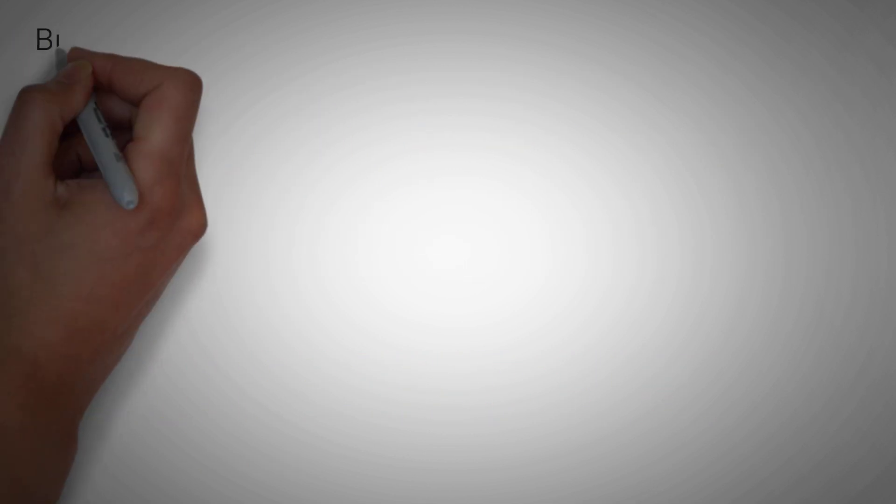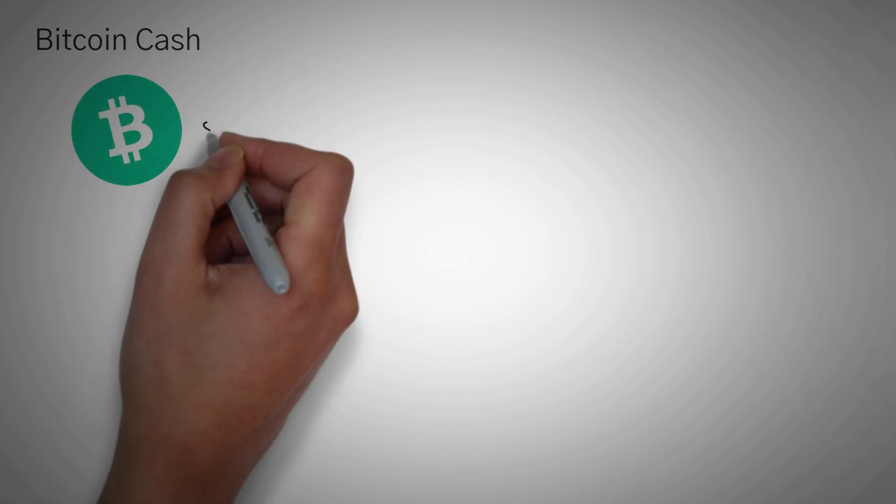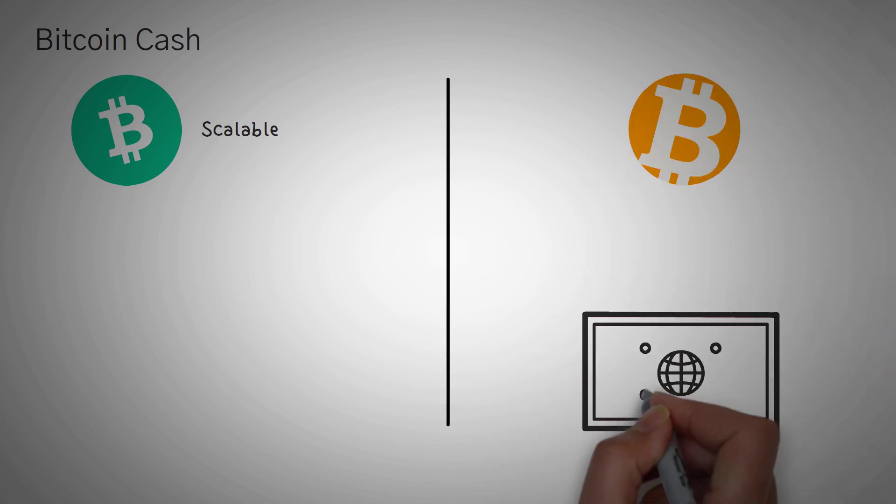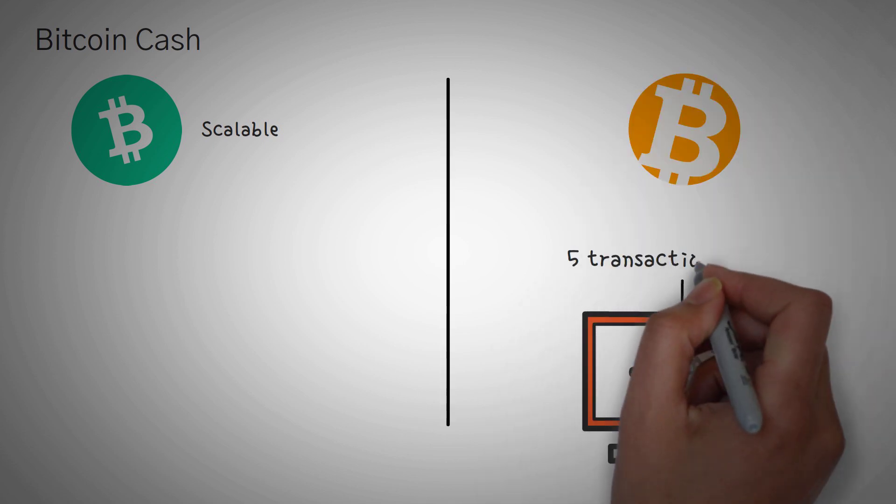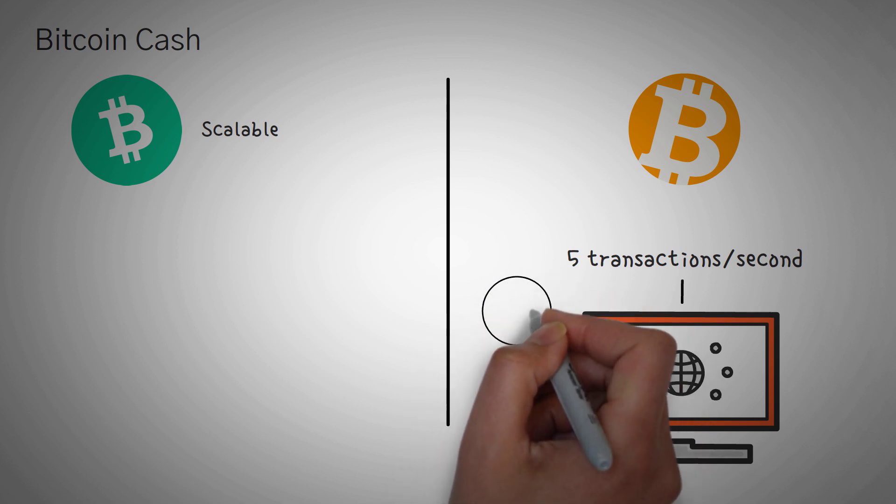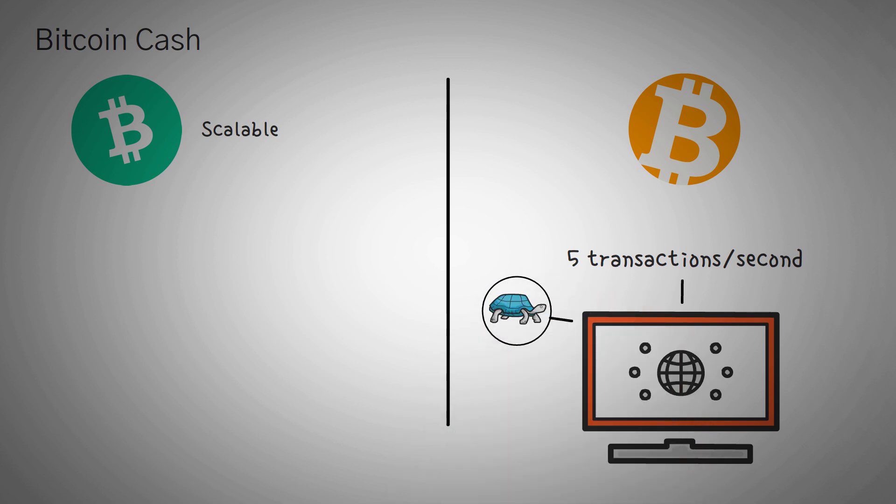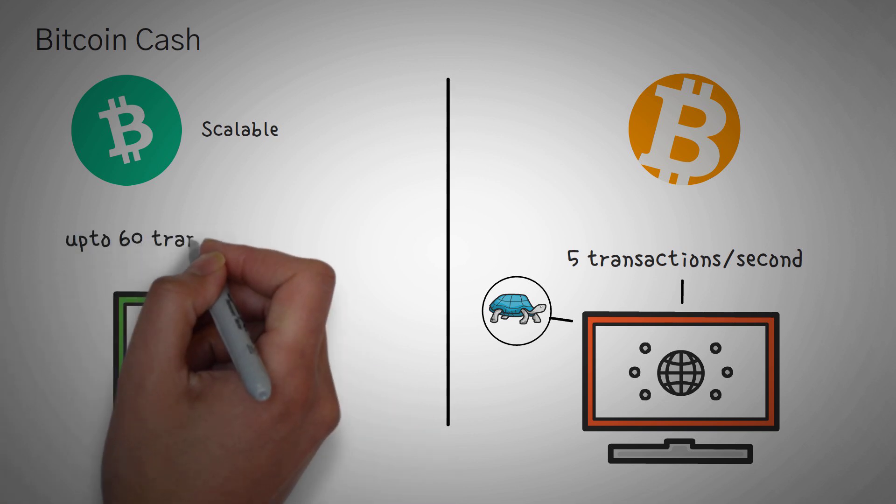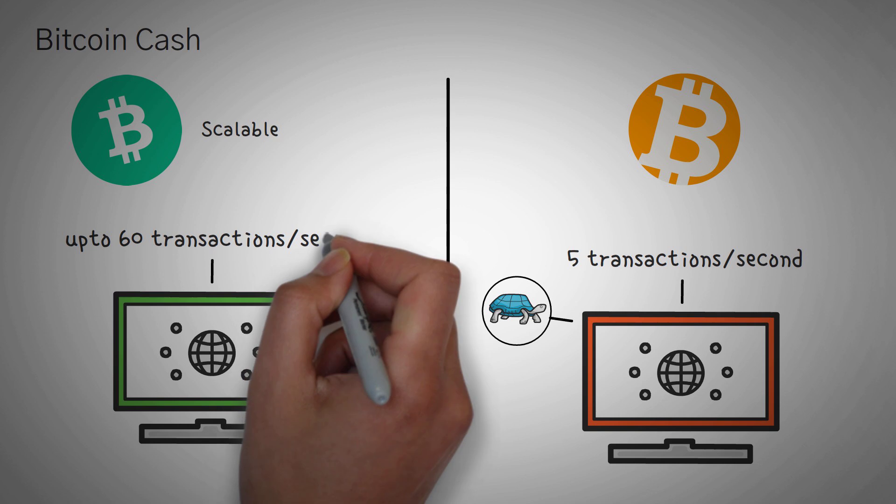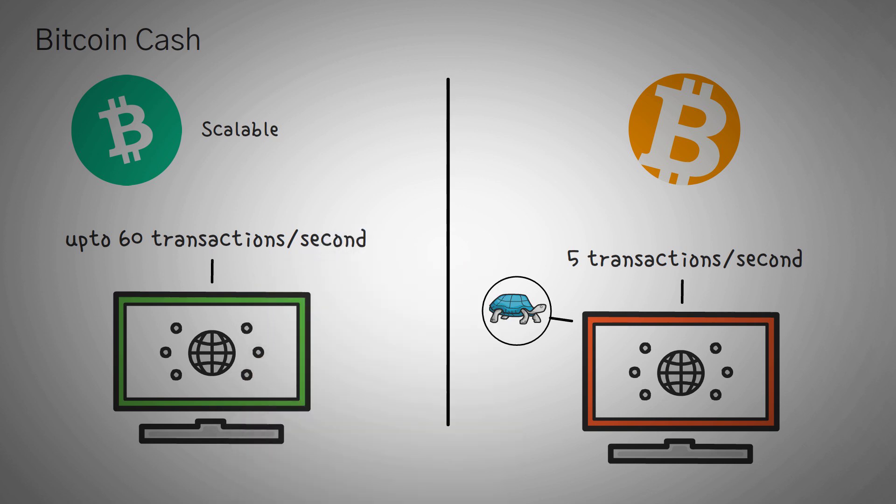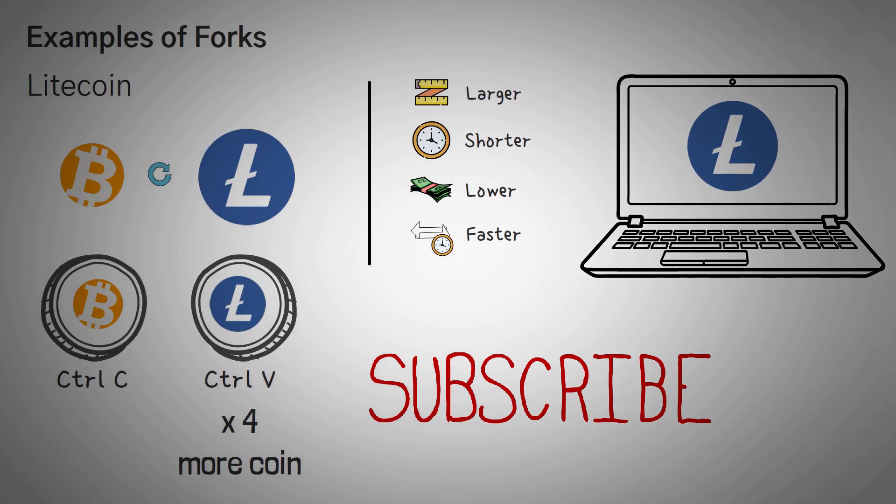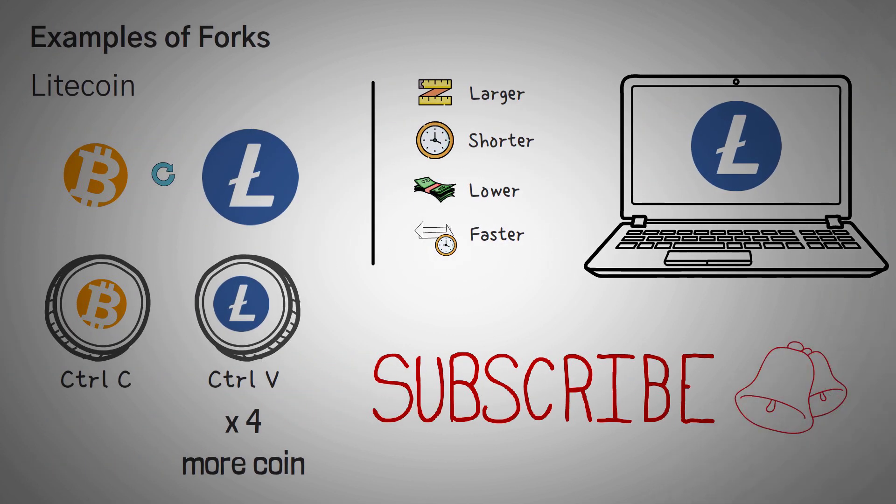Next up, we have Bitcoin Cash. So, Bitcoin Cash is very similar to Bitcoin, but they wanted to make the cryptocurrency actually scalable. To show you what I mean, Bitcoin can only process, like, five transactions a second, which is really, really slow using today's fast-paced economic system. Bitcoin Cash simply increased the block size so that more transactions could happen per second, up to 60 per second, which is a huge improvement. We'll probably make a specific video about Bitcoin Cash as well, so if you've already hit that subscribe button, turn on notifications too.